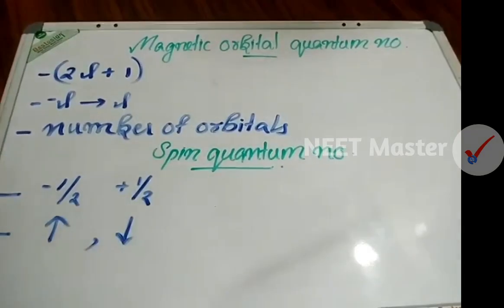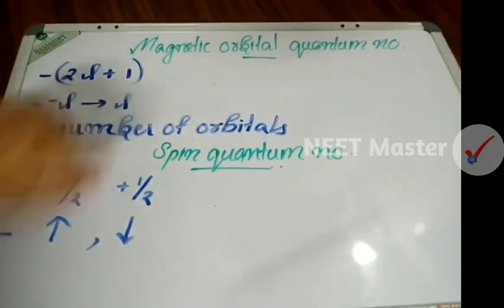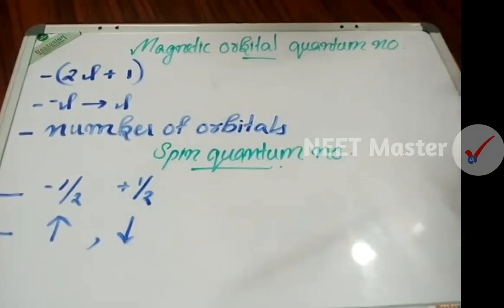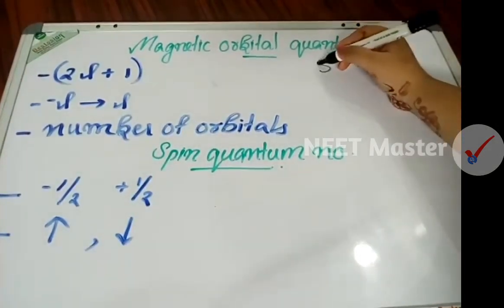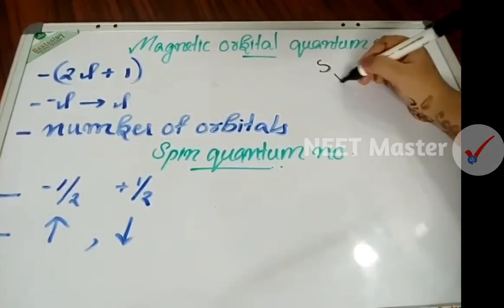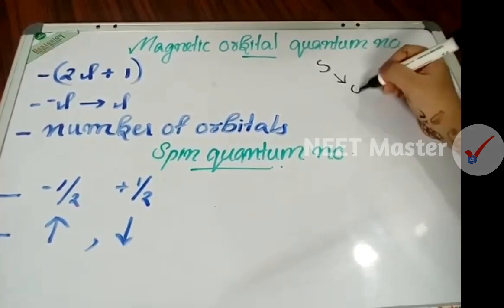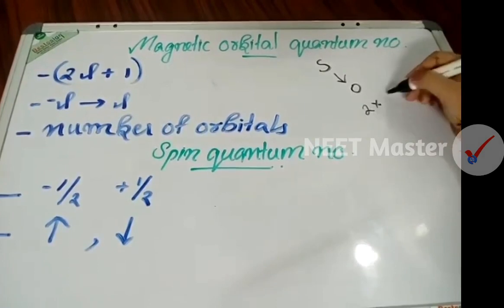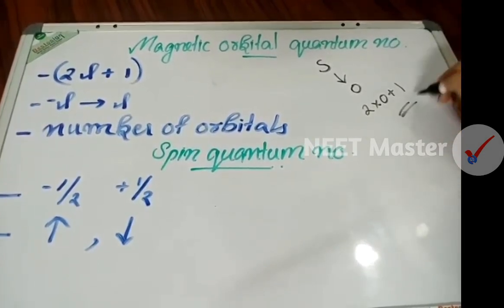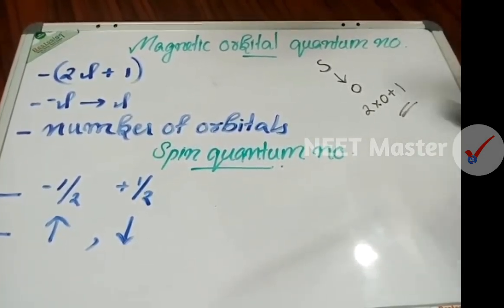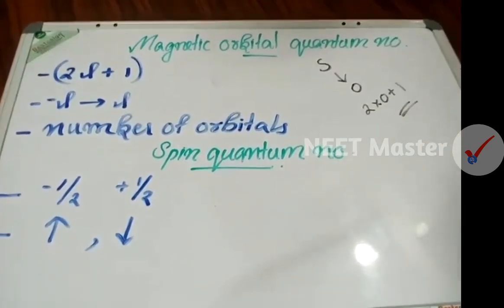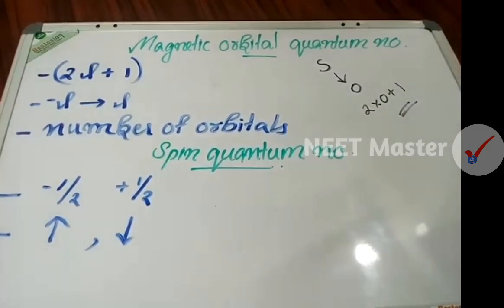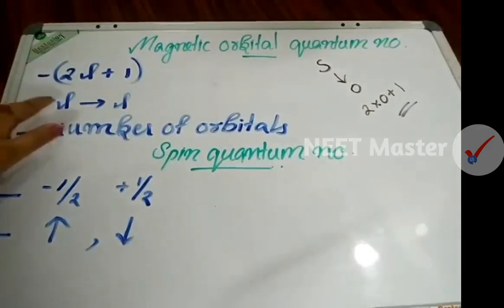The Magnetic Quantum Number: if we have 2l plus 1, we will get 2l+1 values. For s orbital, l=0, so 2(0)+1 = 1. That gives us 1 orbital.